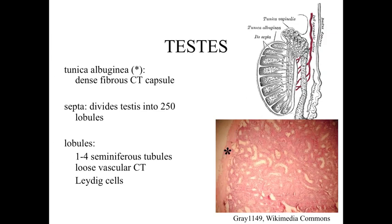An extension of the tunica albuginea — this dense fibrous connective tissue capsule around the outside — is going to extend into the testes, dividing it up into approximately 200 to 250 different lobules. Within each one of those individual lobules, there's going to be between one and four seminiferous tubules, and the seminiferous tubules are important because those are the structures that produce the spermatozoa — the male germ cell, the mature sperm cell. In between these seminiferous tubules is going to be a loose vascular connective tissue, and, more importantly, it's going to be the location of the Leydig cells, which are involved with the synthesis and production of the hormone testosterone.